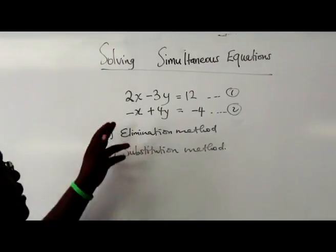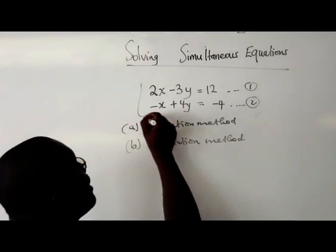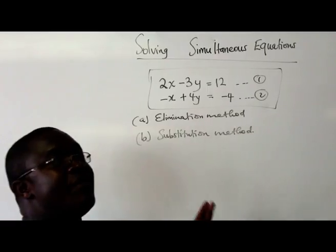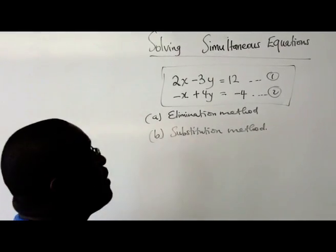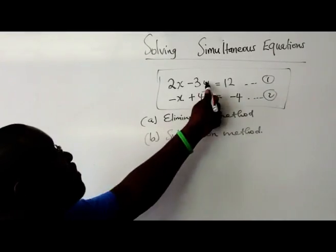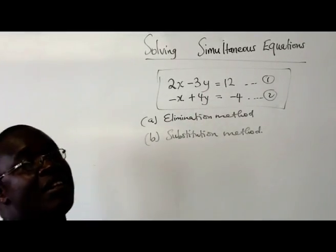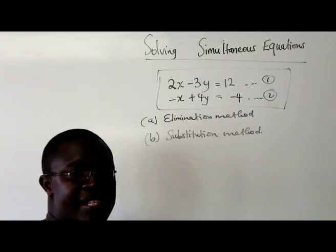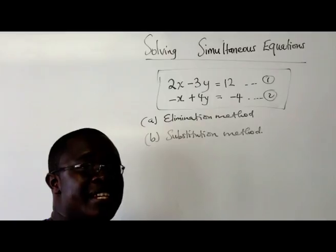We've got two equations that are equation 1 and equation 2. We're saying that there are simultaneous equations in that the value of x is the same in both equations and the value of y is also the same in both equations.